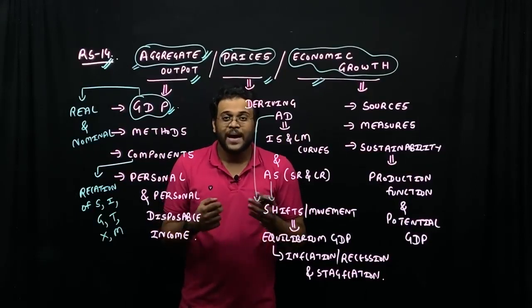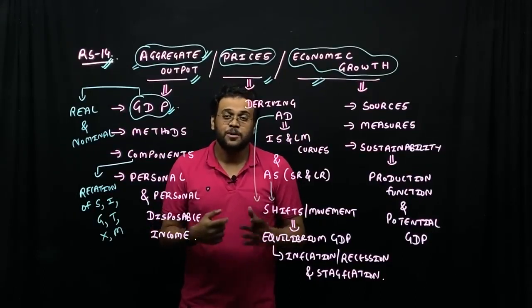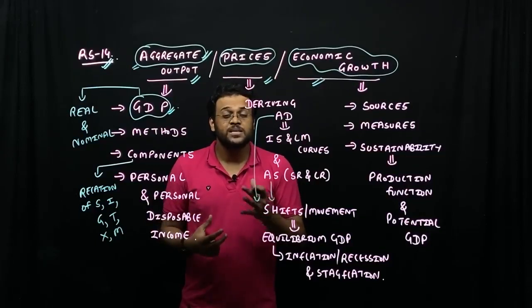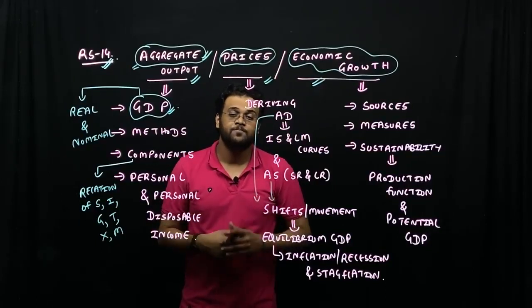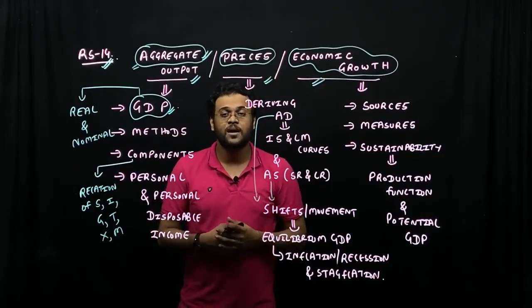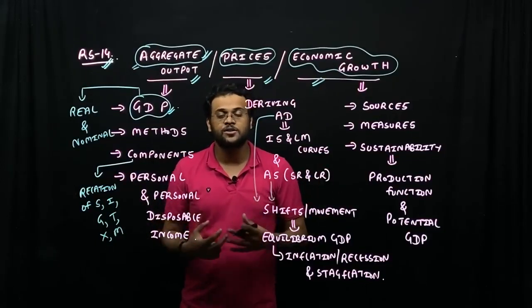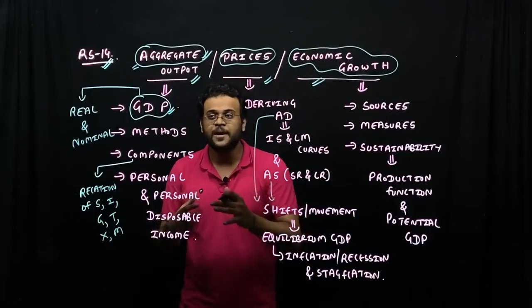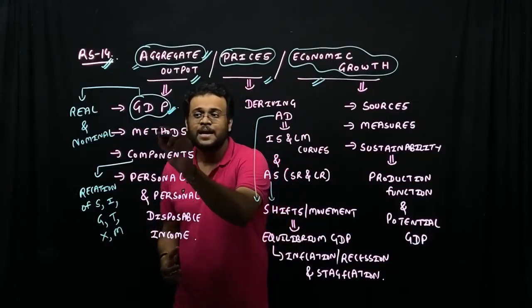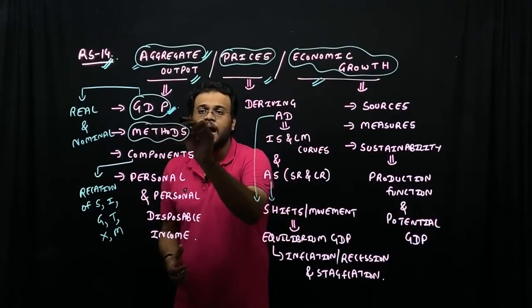India's GDP is approximately 2.7 to 2.8 trillion dollars. Ideally, as per measures, the largest GDP in the world is the US at 21 trillion dollars, then China at 14 trillion. What is the GDP? How does it go?